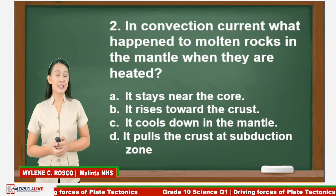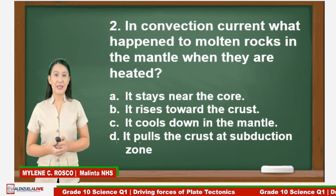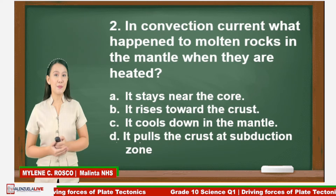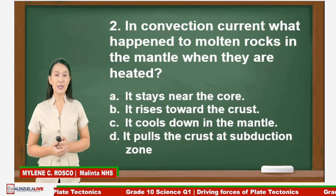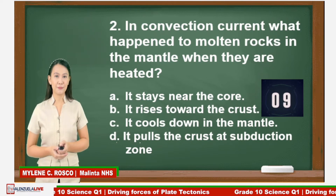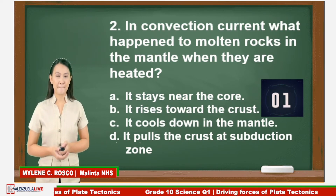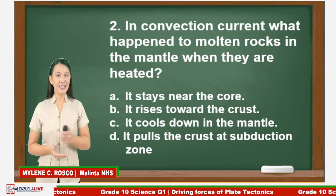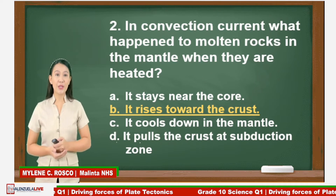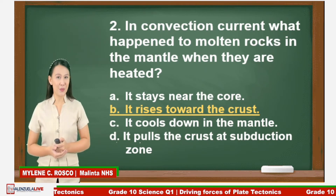Question number two: In the convection current cycle, what happens to molten rocks in the mantle when they are heated? A. It stays near the core. B. It rises towards the crust. C. It cools down in the mantle. Or D. It cools the crust at the subduction zone. You have 10 seconds — go. Time is up. The correct answer is letter B: it rises towards the crust. Remember, when molten rocks are heated, they become less dense and rise towards the crust. Now let's go with question number three.